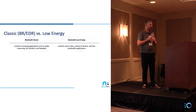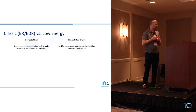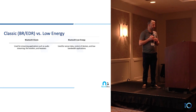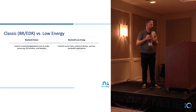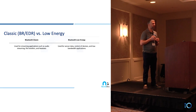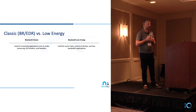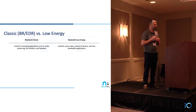In general, Bluetooth Classic is used for streaming applications such as audio streaming, file transfers, and headsets. Bluetooth Low Energy, on the other hand, is used for more sensor-type devices or controlling devices that require only low bandwidth data transfer.